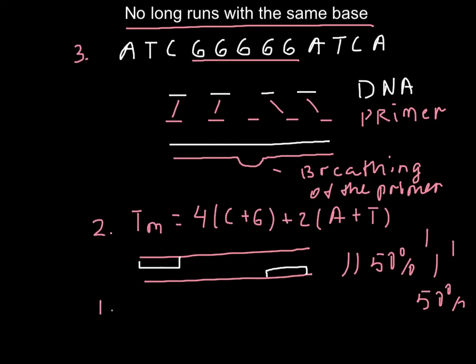Rule number one is to design our primer to be between 17 and 30 bases, because 17 base pairs give us 17 billion possible base combinations, meaning our primer would anneal at only one place. For the human genome, such a primer would have only one place to anneal. We can also use a program like BLAST on the NCBI website to check if our primer has a complementary sequence in known and sequenced genomes, such as the human, mouse, or dog genome.